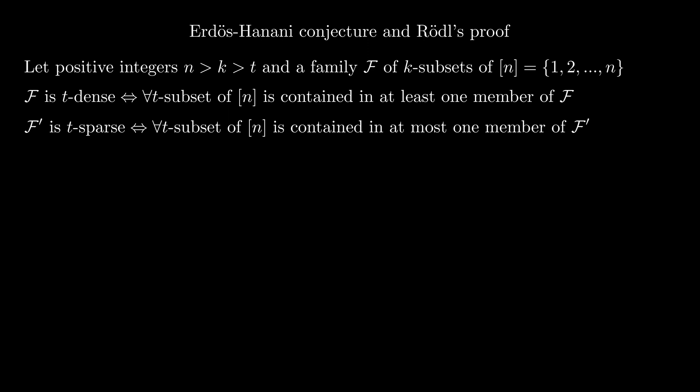Note that we are not talking about designs, not even Steiner systems. In Steiner systems, we have that every t subset appears in exactly one member of the initial family, as opposed to t dense or t sparse families, in which each subset has to appear in at least one member of the family, and at most one respectively. This is why the families with these properties are called approximate Steiner systems.